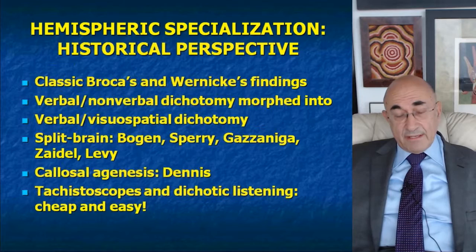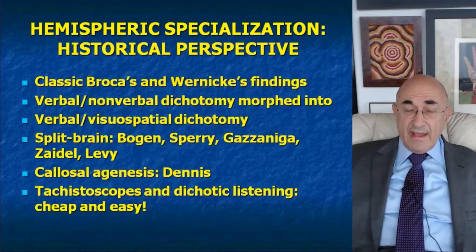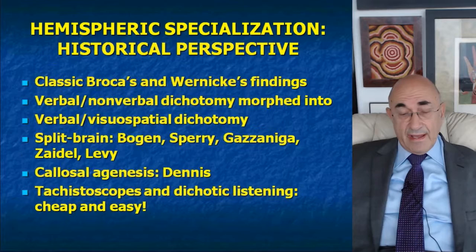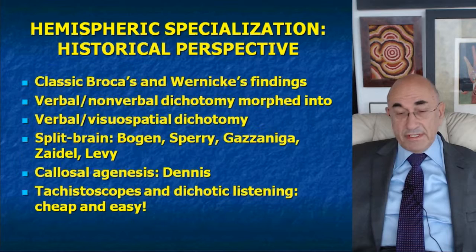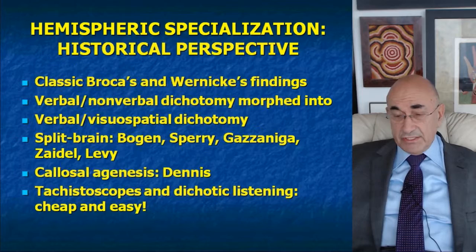Much of our understanding about hemispheric specialization can be credited to research involving split-brain patients — we'll talk about that in more detail — as well as to studies of patients with callosal agenesis. There was also a surge of work on hemispheric specialization in the late 1960s through the 1980s, using low-tech devices like tachystoscopes and dichotic listening devices. There was a proliferation of studies precisely because these technologies were so inexpensive and easy to operate. We'll discuss each type of contribution, including the caveats linked to each strand of research.